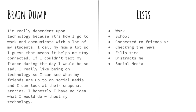Another option is a brain dump, where you just write all your ideas out. They don't have to be coherent, make sense, or use proper spelling or grammar — you're just getting all your ideas out of your head onto paper. This works well if you have a lot to say and need to get it all out before you forget it. My personal favorite is just to make a list. For this prompt, I'd list why teenagers are dependent: work, school, connected to friends, checking the news, it fills the time, it distracts them, social media. This list could go on and on. Go ahead and pause the video and do your brainstorming.